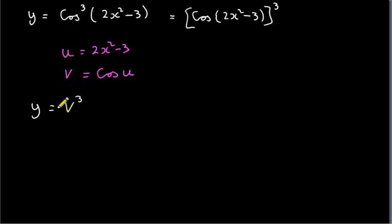So if we unpack this, v cubed is cos cubed u. That's the meaning of taking cos u and raising it to the power of 3. We just write our 3 as a superscript here.